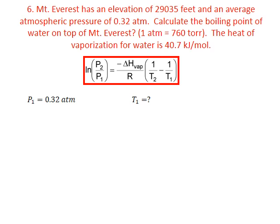Our first data point will be on top of Mount Everest: a vapor pressure of 0.32 atmospheres and our unknown boiling point temperature. While we're not given specifics for the second vapor pressure and temperature, it's assumed that we know the normal boiling point of water is 100 degrees Celsius and the vapor pressure is 1 atmosphere. You could convert the atmospheres to torr, but it's not necessary — because pressures are written as a ratio, the units will cancel out and we can keep them in atmospheres.